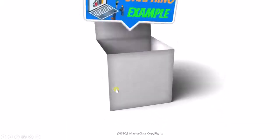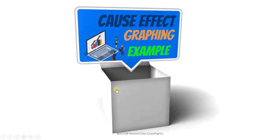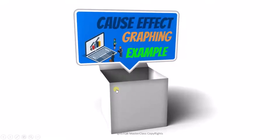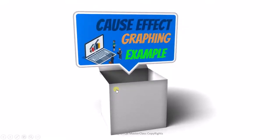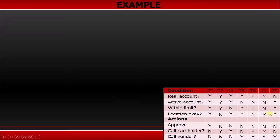So in this lecture, we are going to learn how to draw a cause-effect graph from a decision table. For this, the first thing which we need is a decision table. And then we have to identify what are the different conditions in it and what are the different actions it has.